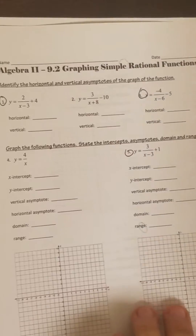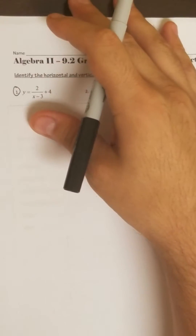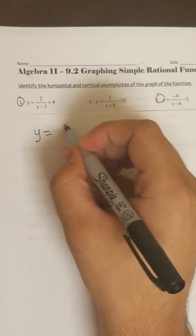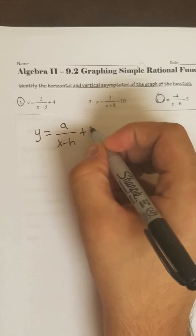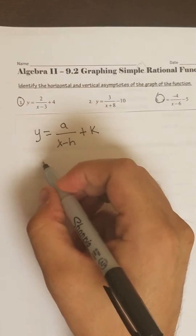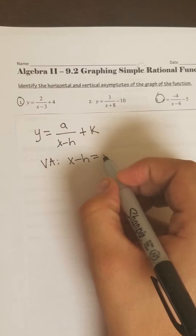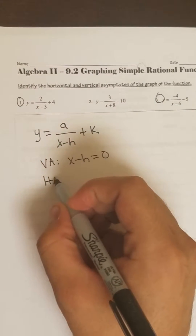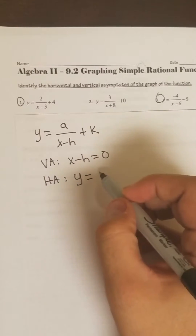So we're going to briefly review what we talked about. If you recall from the lesson, your form of the equation is a over x minus h plus k. In order to find the vertical asymptote, you're going to set the denominator to 0 — in this case, that's x minus h. And to find the horizontal asymptote, you're going to set y equal to your k value.